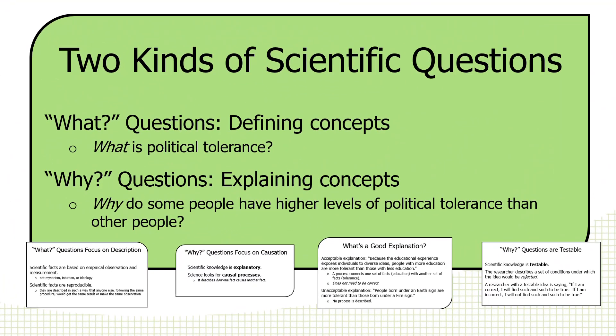Now let's talk about the kinds of questions — kinds of tasks — that are before us here. There are what questions and there are why questions. The first part of the book is about what questions: how do you define a concept, for example? We have a lot of very important and complex concepts in politics. One of my favorites is the concept of political tolerance. What is political tolerance? When you say that person is politically more tolerant than another, what do we mean by that? These are the first things we have to tackle.